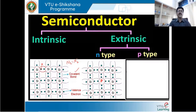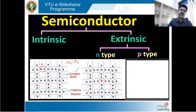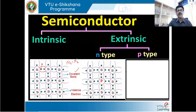The second kind is the extrinsic semiconductor, which is an impure semiconductor material where some kind of impurity is added. The impurity could have one excess electron or one shortage of electrons. Accordingly, the extrinsic semiconductor is divided into two categories: the n-type semiconductor and the p-type semiconductor.